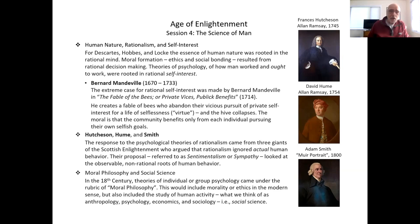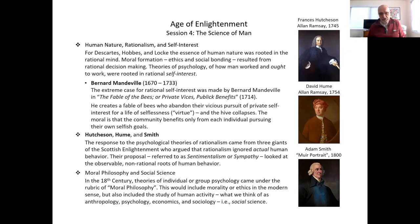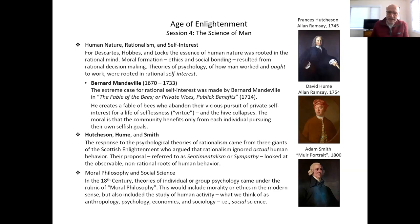Then we have this remarkable trio of Scottish intellectuals who all knew one another. The father of the group — the eldest — is Francis Hutcheson. One of his direct students is Adam Smith; one of his indirect students is David Hume. These three respond to the psychological theories of rationalism by arguing that rationalism ignored actual human motivation. What they propose — called 'sentimentalism' by Hutcheson, and 'sympathy' by Hume and Smith — looked at observable, non-rational roots of human behavior.